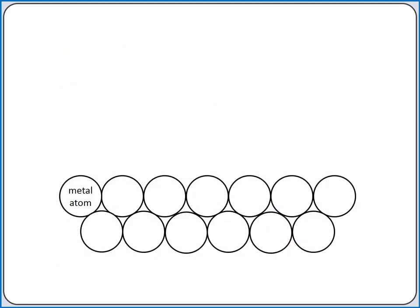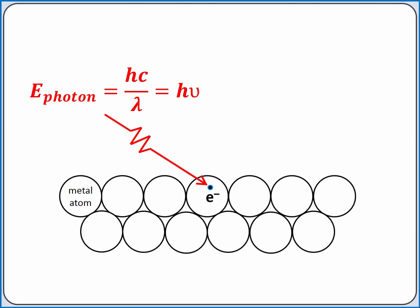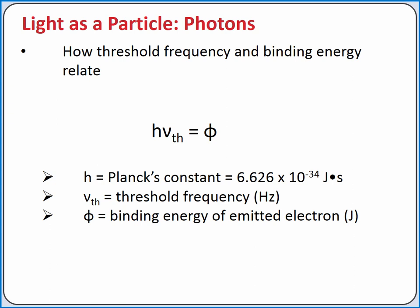So with our photoelectric effect, an electron is absorbing the energy of a photon. The energy of the photon is equal to hc over lambda, or h nu. The energy keeping our electron in the metal is the binding energy. The energy of the photon must overcome this binding energy to eject the electron. Our binding energy is equal to Planck's constant times the threshold frequency, which is the frequency when we just begin to eject electrons.